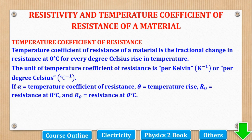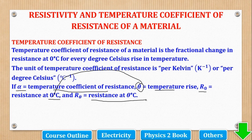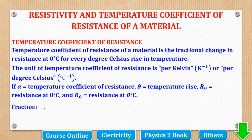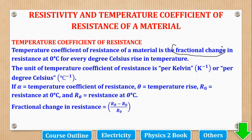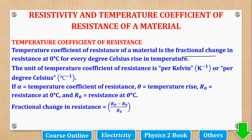We are going to derive an equation involving three parameters: alpha (TCR), temperature rise from 0 degrees Celsius up to the temperature theta, and resistance at 0 degrees Celsius (R₀) and resistance at any other temperature (R_θ). Fractional change in resistance at 0 degrees Celsius means the change in resistance over the initial resistance, which is the resistance at 0 degrees Celsius.